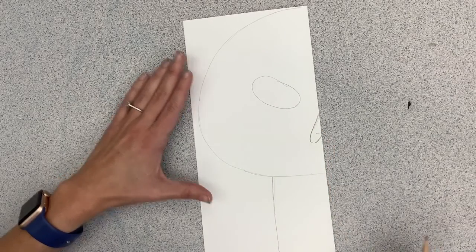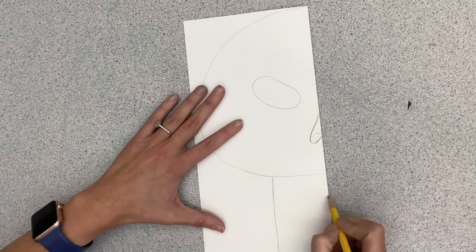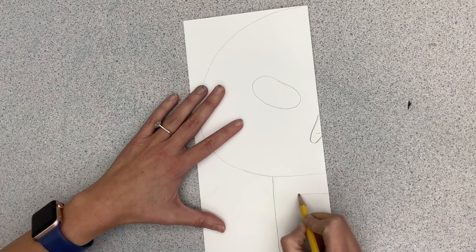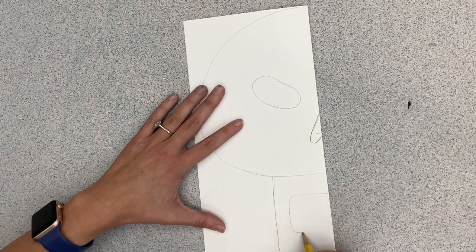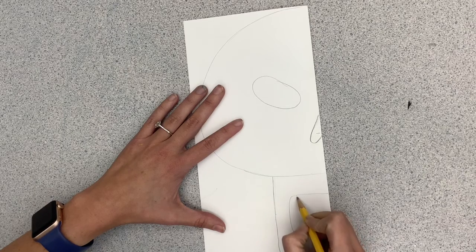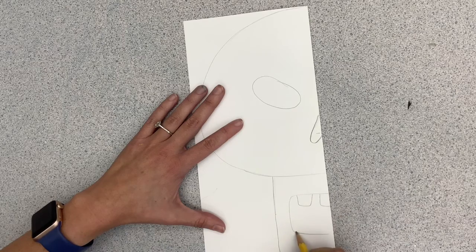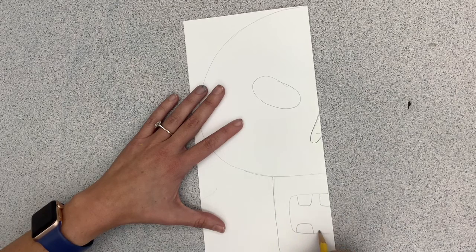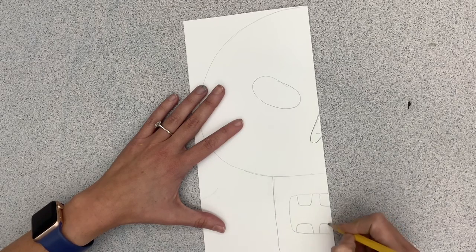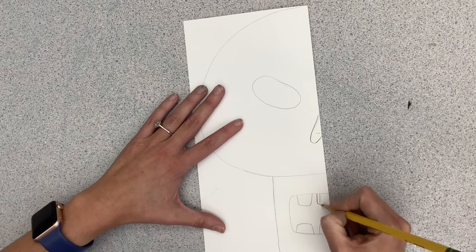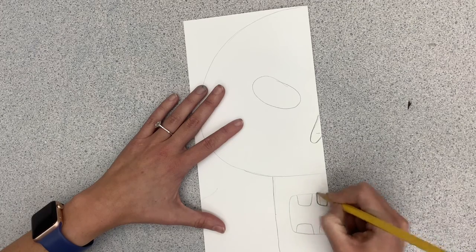You're gonna draw an oval for the eye and then in that jaw space is where we're gonna make the mouth opening. Make sure it's at least a finger or two away from the edge. You may then go in and draw your teeth. Careful that your teeth do not touch that center fold line.